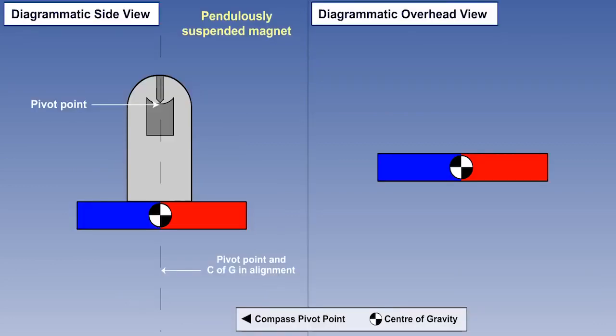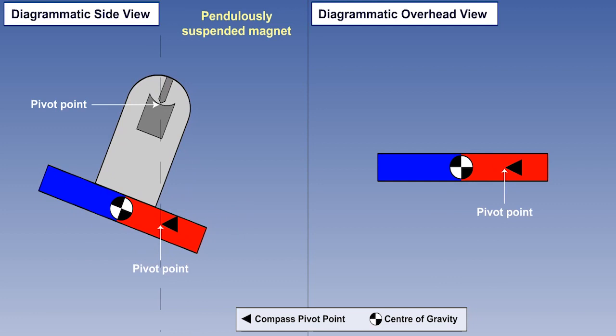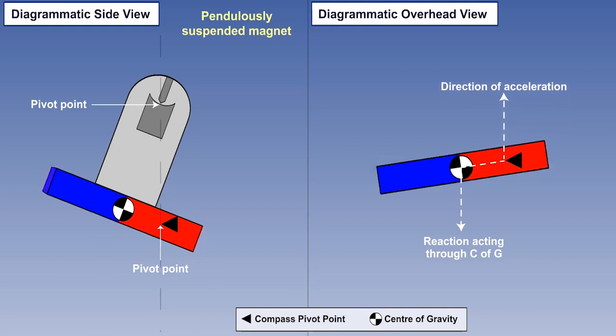Now let's look at the reason why this error occurs. Linear acceleration errors occur in direct reading magnetic compasses because the magnet assembly is pendulously suspended. If the centre of gravity of the compass assembly is not directly beneath the pivot point, as we can see in the diagram here, a couple will be set up between the direction of acceleration and inertia acting through the centre of gravity, which results in a turning moment.